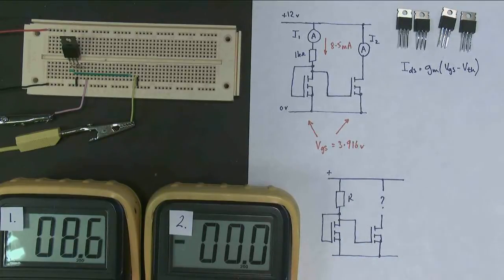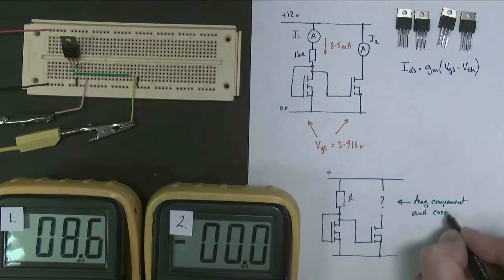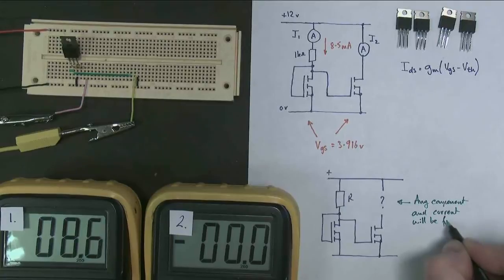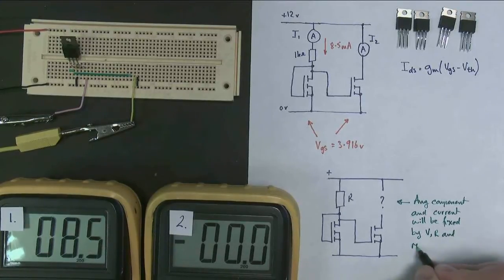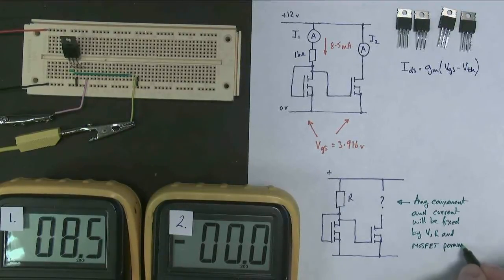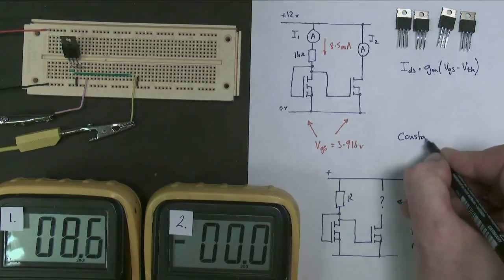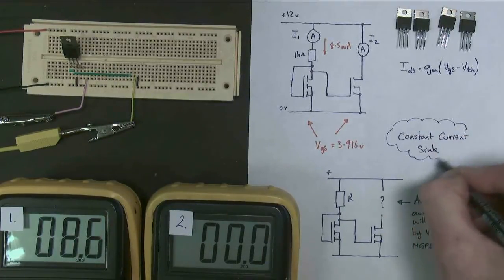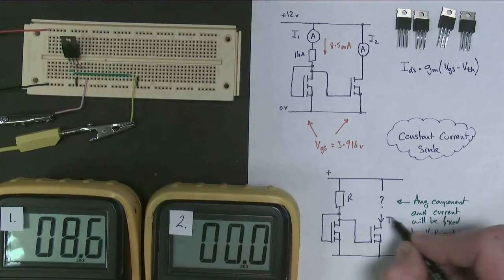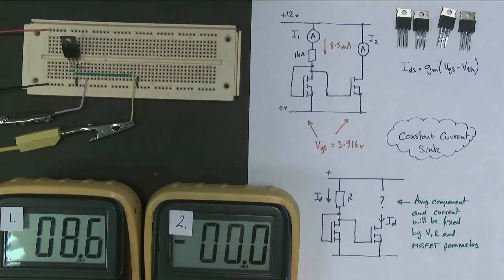So there, any component and current will be fixed by, well by what? By V, R, and the MOSFET parameters. So what you've got here, this is called a constant current sink. And the reason it's called a constant current sink is because this MOSFET here will sink a current which is exactly the same as this current. Those two currents are identical. It will sink that current irrespective of what component you put there. Very very useful, for instance, for driving laser diodes.